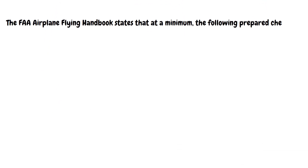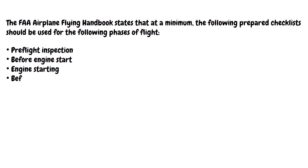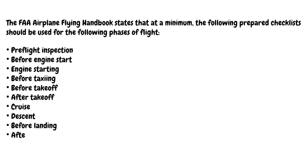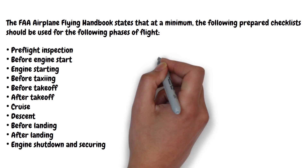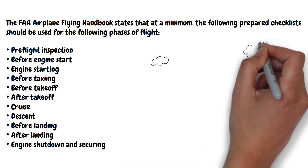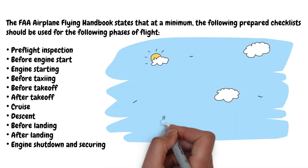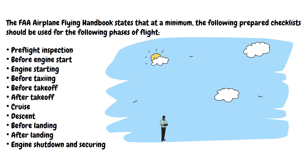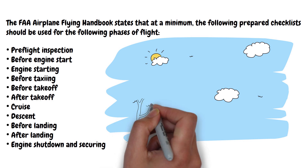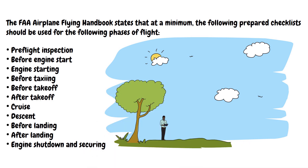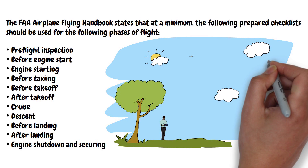The FAA Airplane Flying Handbook states that, at a minimum, the following prepared checklists should be used for the following phases of flight: pre-flight inspection, before engine start, engine starting, before taxiing, before takeoff, after takeoff, cruise, descent, before landing, after landing, engine shutdown and securing.